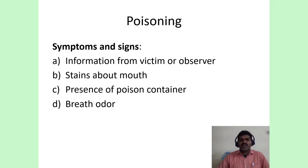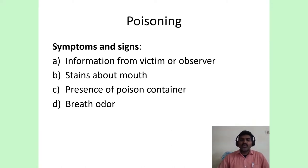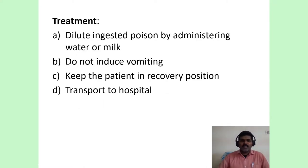In poisoning cases, the patient might tell you he has consumed poison. There are also telltale signs: information from the victim or an observer, stains around the mouth because the patient hastily poured poison in and hastily swallowed, presence of a poison container near an unconscious patient, and a peculiar odor in the breath which can indicate consumption of a poisonous substance.